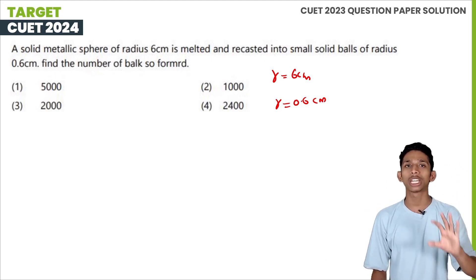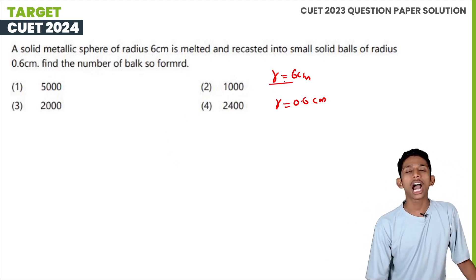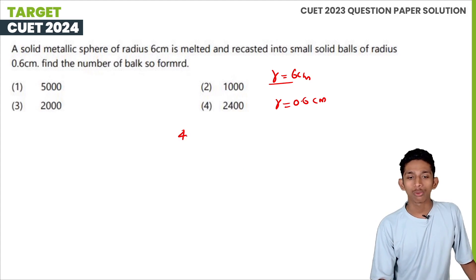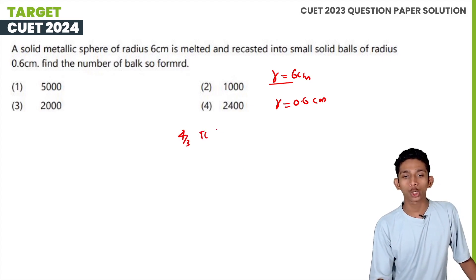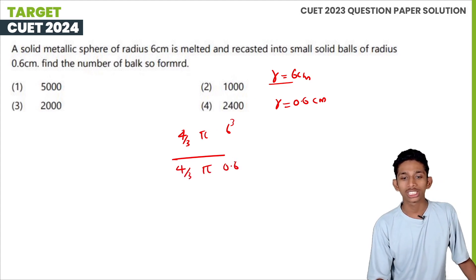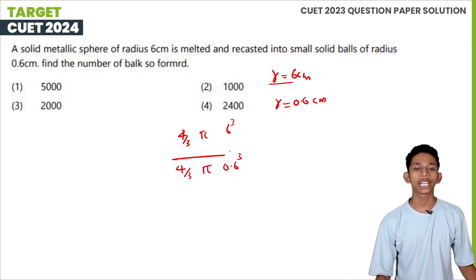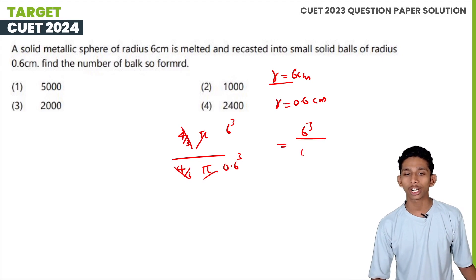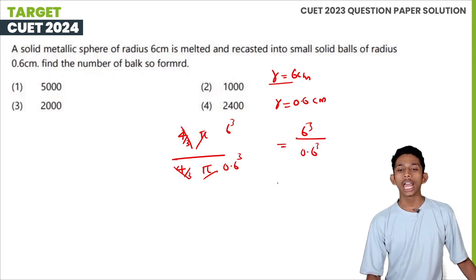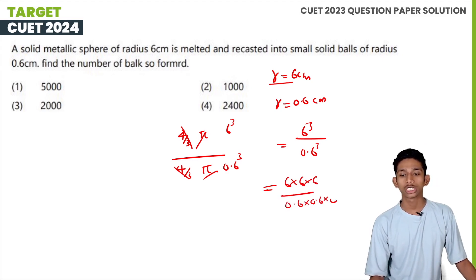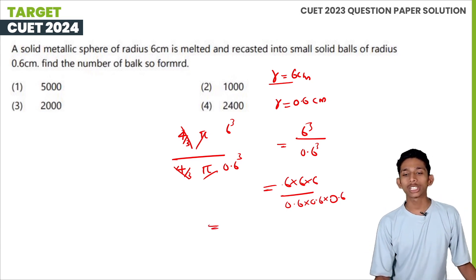You can divide the volume of the large sphere by the volume of each small sphere. The volume formula is 4/3 π r³. So the number of balls equals (4/3 π × 6³) divided by (4/3 π × 0.6³), which simplifies to 6³ divided by 0.6³. That is 6 × 6 × 6 divided by 0.6 × 0.6 × 0.6, which gives 216 divided by 0.216.